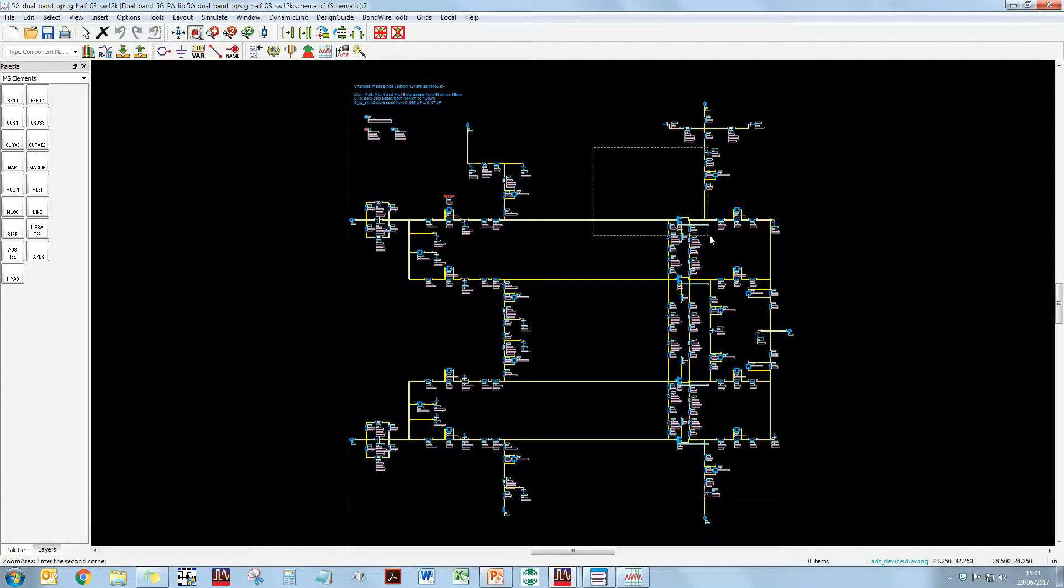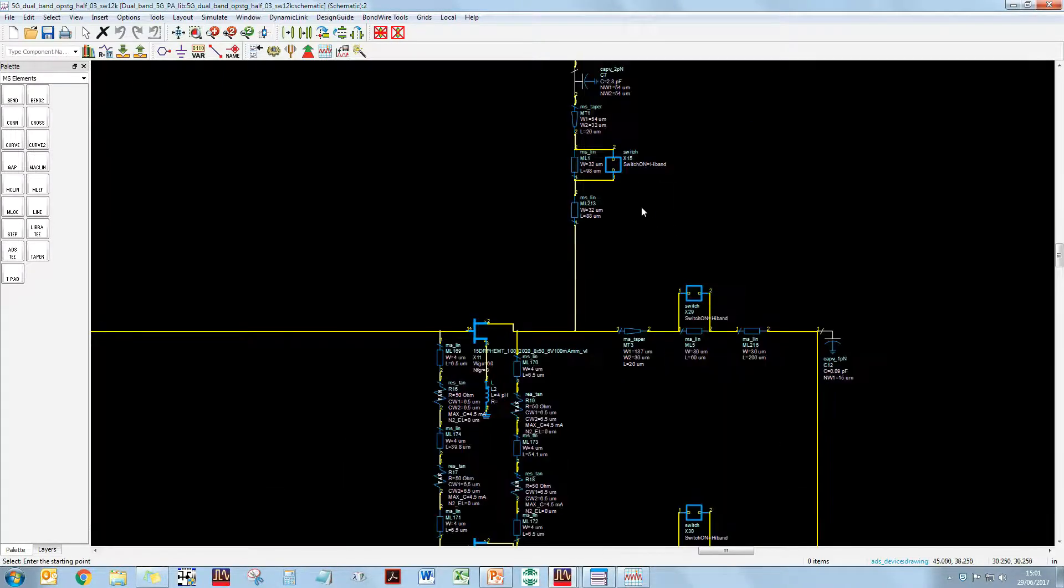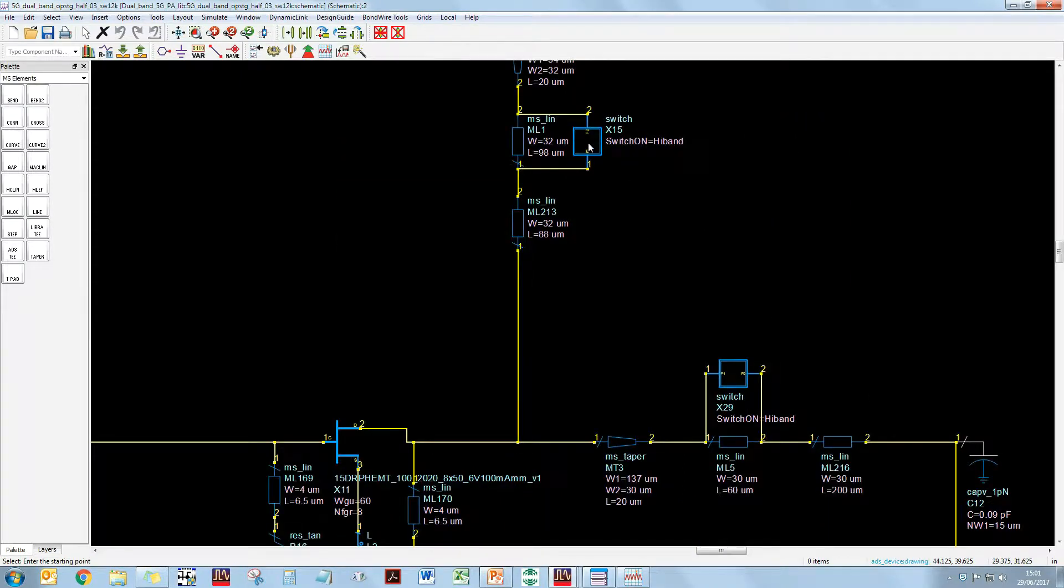Now, let's see where I've implemented these switches. So, you can see there's one here, and this is being used to alter the effective length of this drain line between the two bands. So, the drain line is running from this net to this net, and when this is switched on, it reduces the effective length between this net and this net. So, that's the case for high band. And when it's switched off, the effective length is increased.